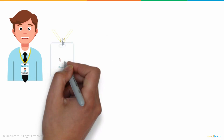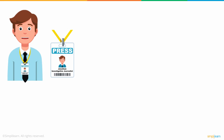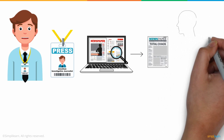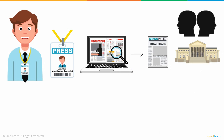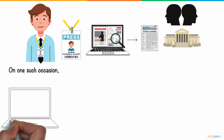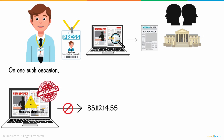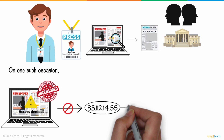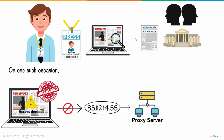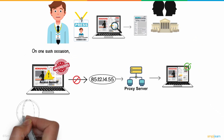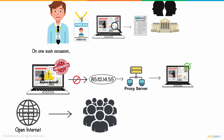Meet Jonathan. He is an investigative journalist who occasionally researches and publishes news articles contrary to the government's ideologies. On one such occasion, he could not access a global news website dealing with uncensored information. It seemed his IP was blocked from visiting the news website. With his IP blocked, Jonathan turned to a popular proxy service that was able to unblock the news website, thereby allowing an open internet to all users.